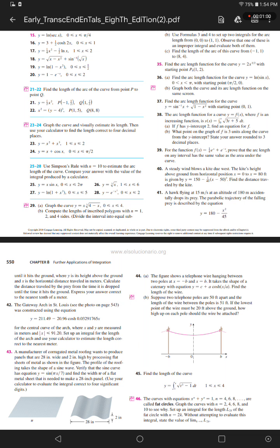Number 37. Find the arc length function for the curve y equals the inverse sine of x plus the square root of 1 minus x squared, starting with point (0, 1).